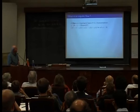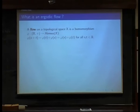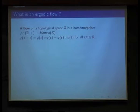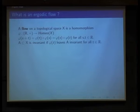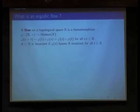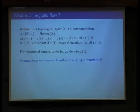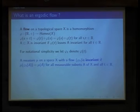A flow is just a one-parameter subgroup of homeomorphisms. In the case that X is a differentiable manifold, these are the flow transformations of a vector field — you can think of them as a force field on a space. The map φ_t describes where a point x is after time t. An invariant set is one left invariant by each of the flow transformations. An invariant measure is one for which the measure of a set A equals the measure of any of its translates.